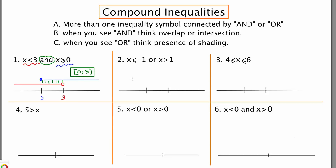In example 2, we have the compound inequality X is less than or equal to negative 1 or X is greater than 1. Focusing on the left hand side first, I have X is less than or equal to negative 1. I'm going to put negative 1 on the number line, make the circle closed to be inclusive, and less than or equal to means shade to the left. The second part of the compound inequality is X is greater than 1. I'm going to put 1 on the number line, be exclusive because there's no equal sign, and greater would imply shading to the right.